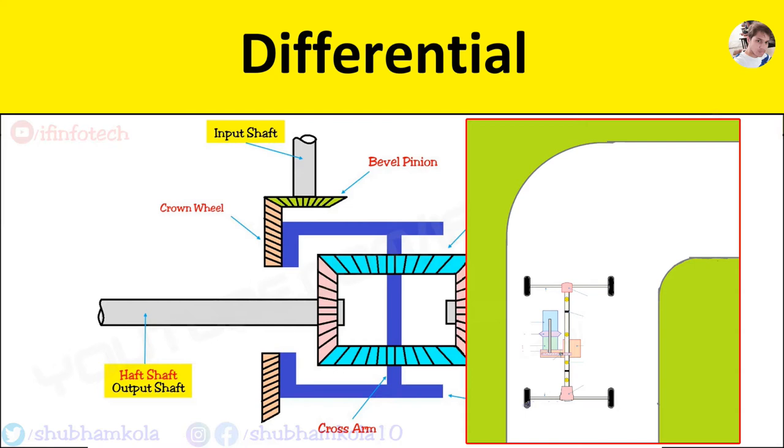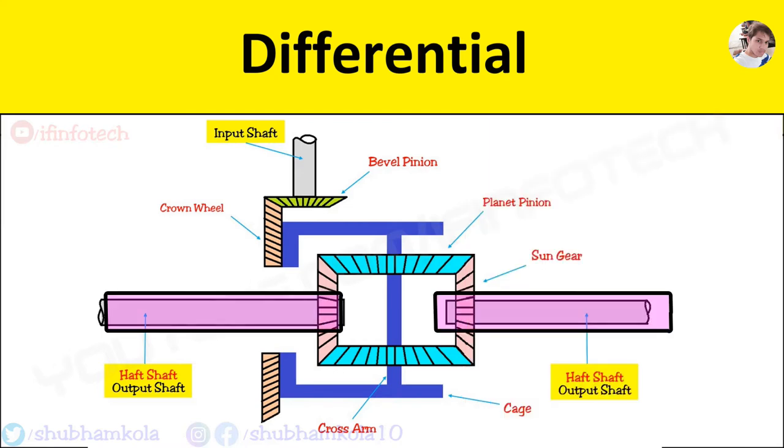The speed difference between two wheels become possible because two half-axle shafts are not directly coupled to crown wheel but are driven through bevel pinion and side gear. This gear system constitutes a differential.